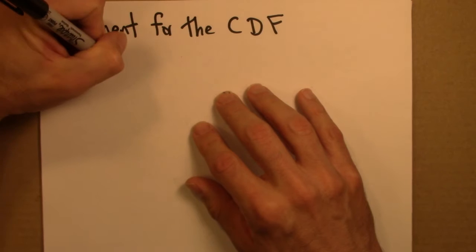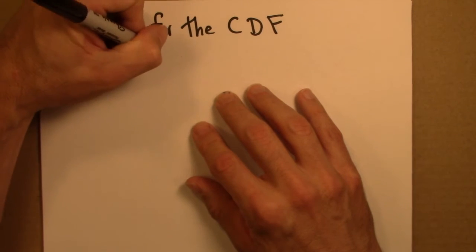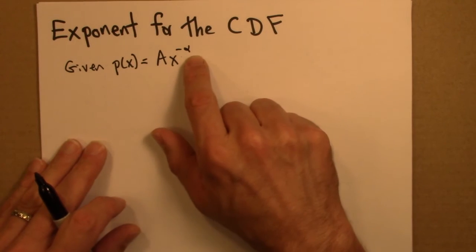So in other words, given that we have some x that's described by this probability density, our familiar power law, Ax to the minus alpha.